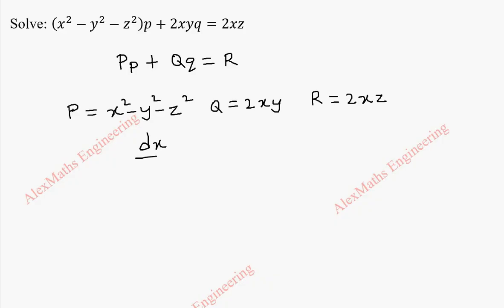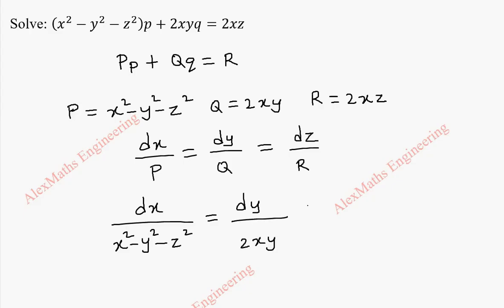To get the solution, we have to solve dx by capital P equal to dy by capital Q equal to dz by capital R. Now this is dx by x squared minus y squared minus z squared equal to dy by 2xy which is equal to dz by 2xz.